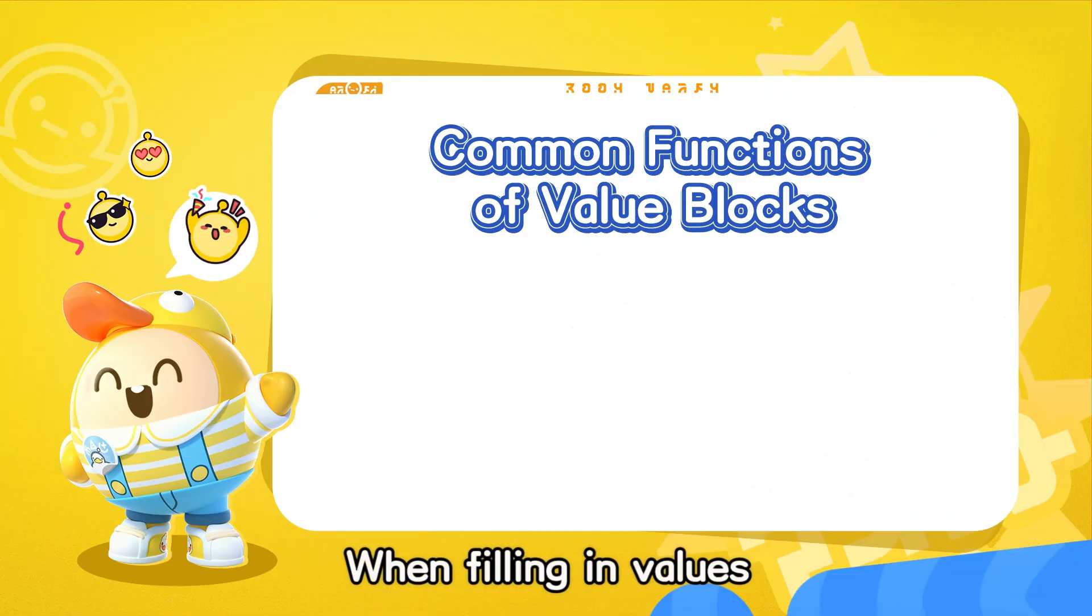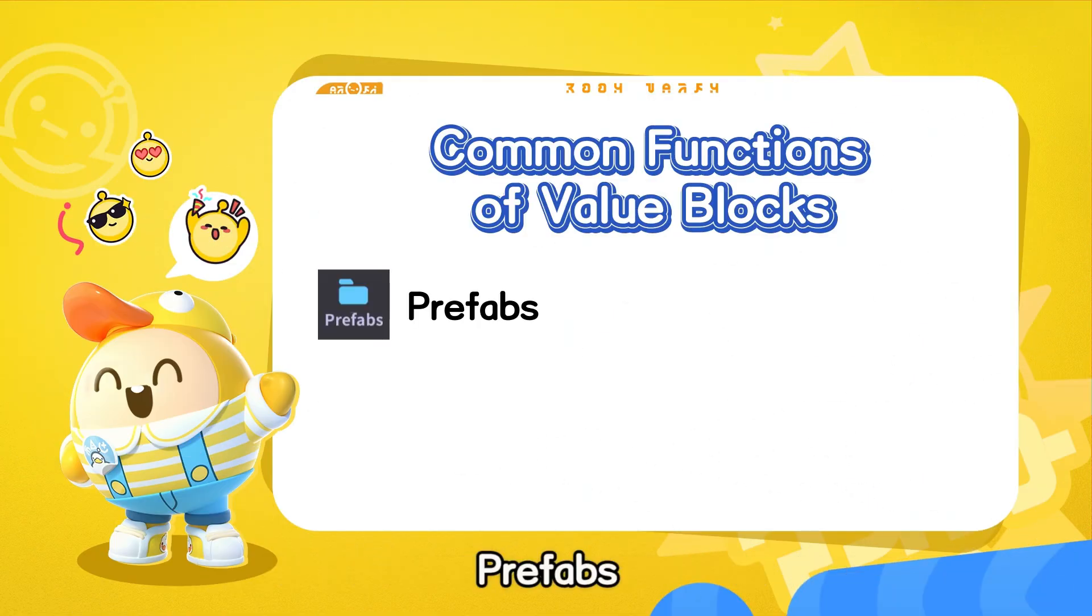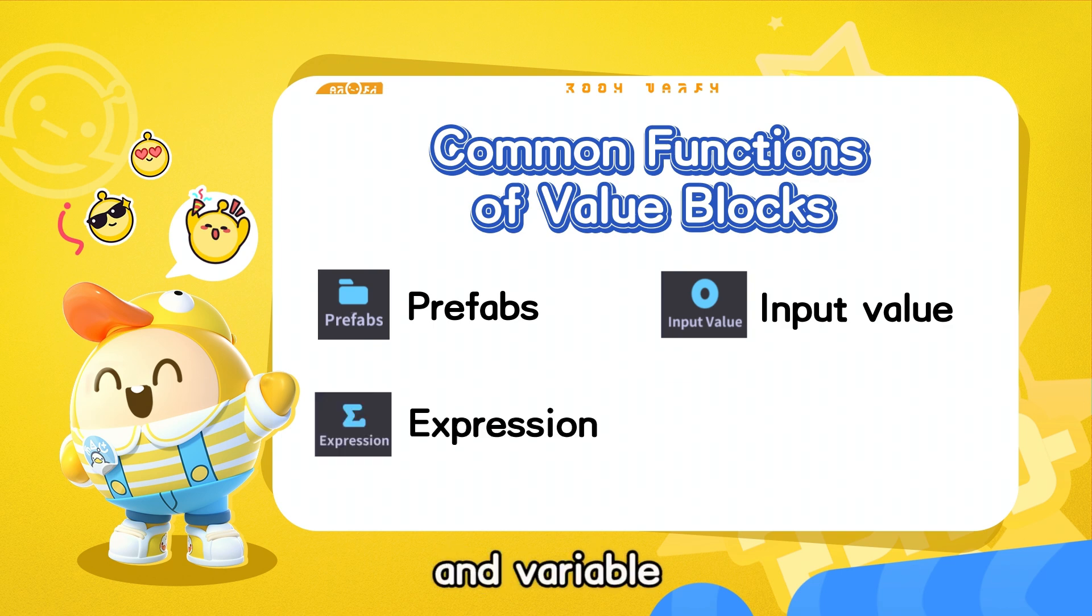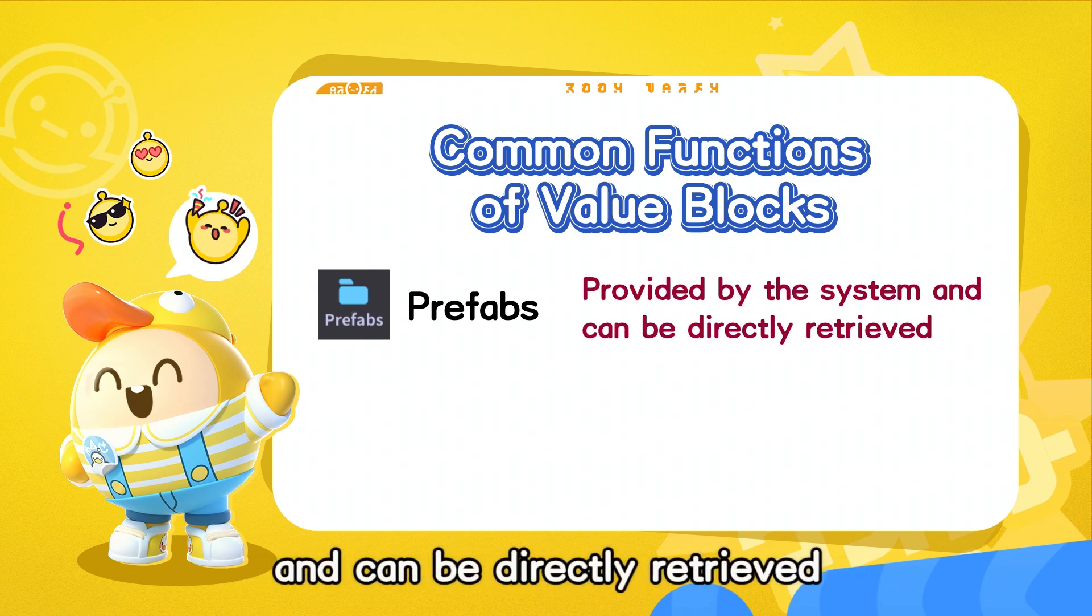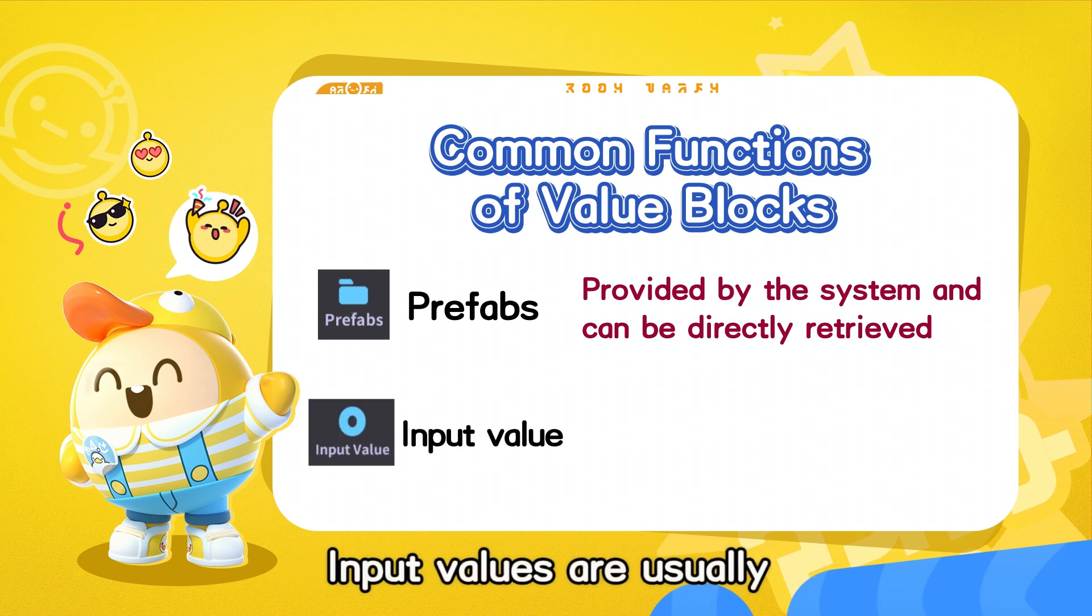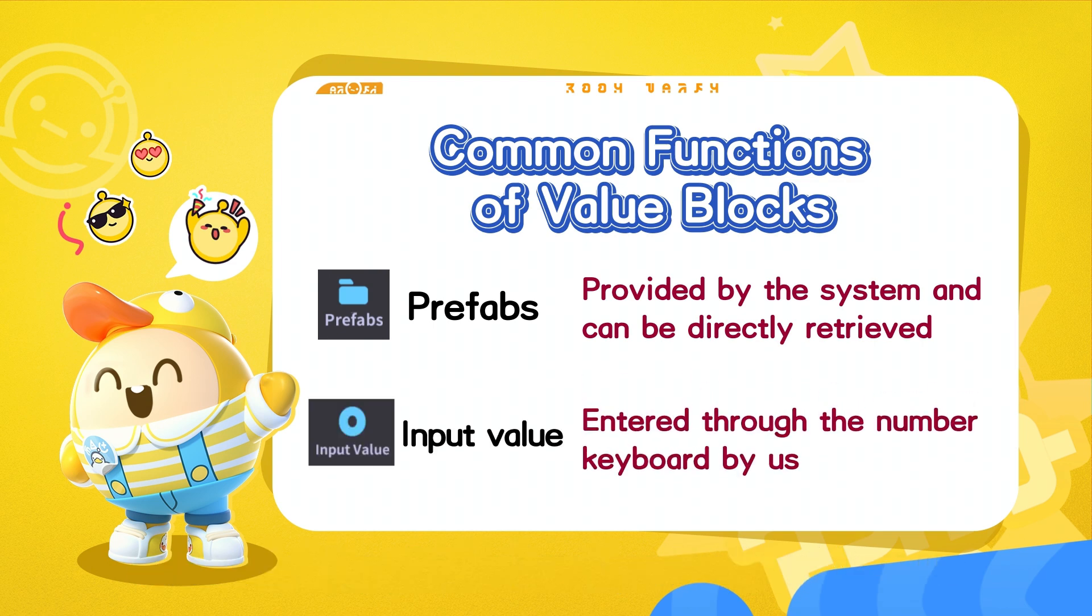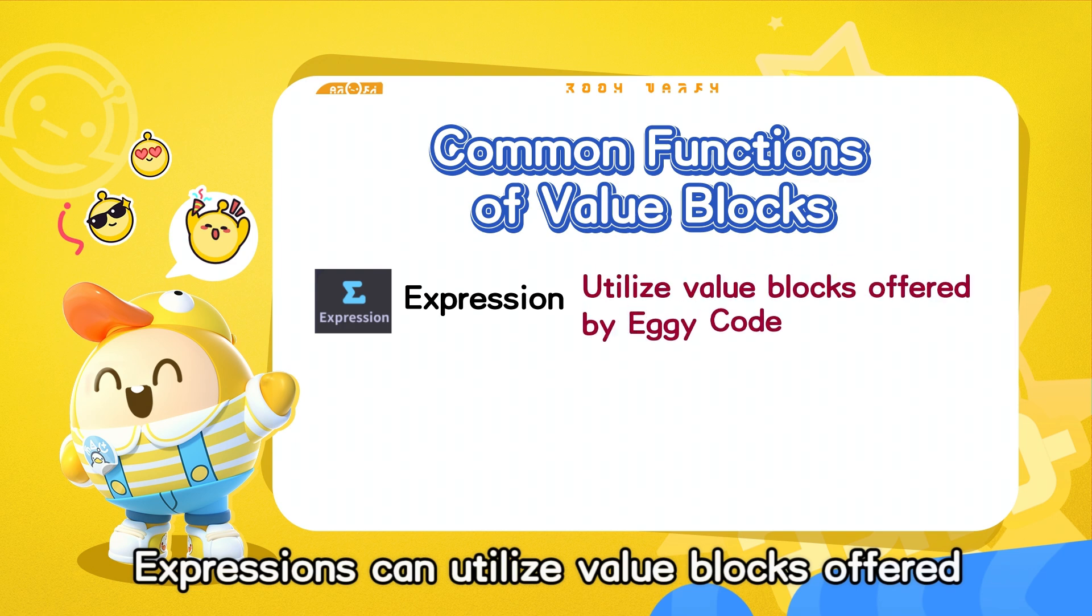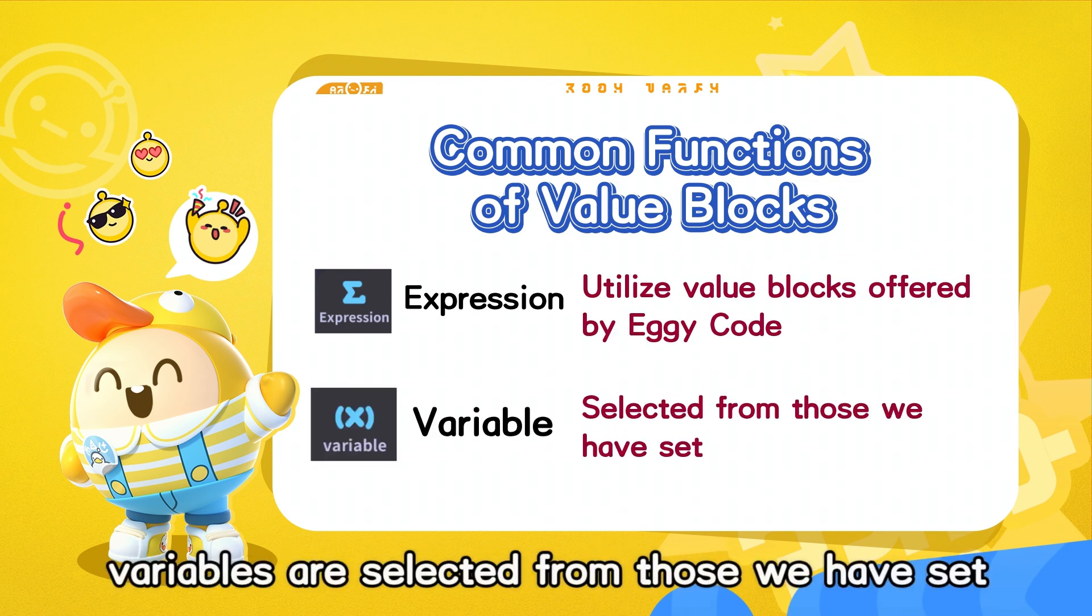When filling in values, there are usually four ways to do so: prefabs, input value, expression, and variable. Prefabs are provided by the system and can be directly retrieved. Input values are usually entered through the number keyboard. Expressions can utilize value blocks offered by Eggie code. Variables are selected from those we have set.